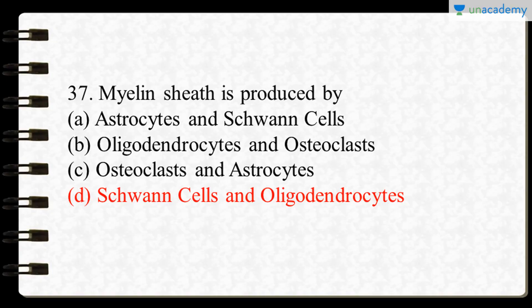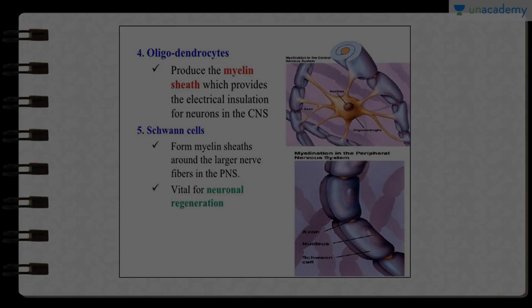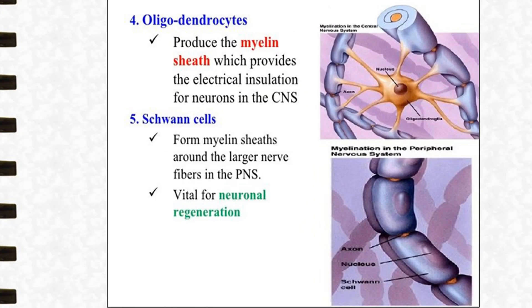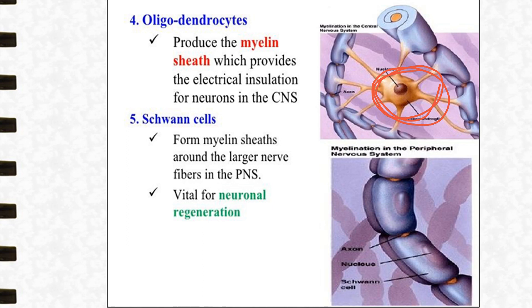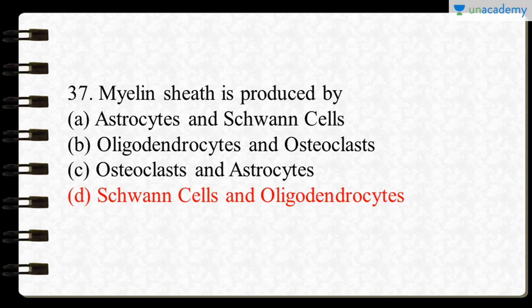The next question: myelin sheath is produced by which cells? Oligodendrocytes are neuroglial cells that produce myelin sheath in the central nervous system, while Schwann cells produce myelin sheath in the peripheral nervous system. Both are involved in the formation of myelin sheath, so option D is the correct answer.